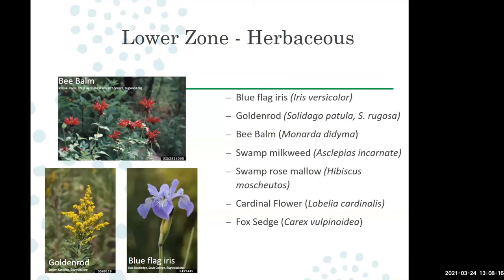Herbaceous plants — those that don't produce woody stems — offer great variety. Common plants that can go into the dry and moderate areas are plentiful. For the lower zone, blue flag iris and goldenrod work well, though goldenrod can be a little aggressive. There are some improved native cultivars that are smaller or less aggressive if you want to stick to native species.